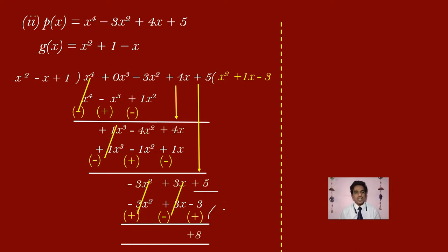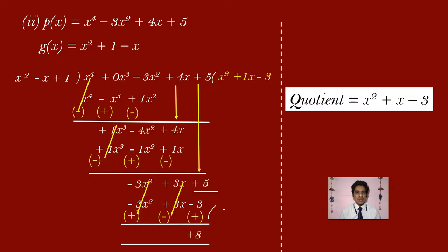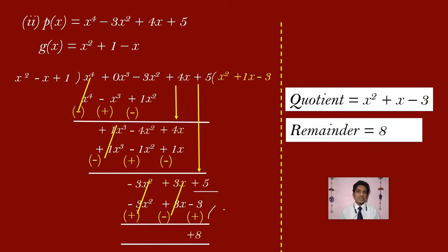This is the end of the division. The quotient is x square plus x minus 3 — the coefficient of 1 is generally not written. The remainder is plus 8, written simply as 8. This is the end of the second problem.